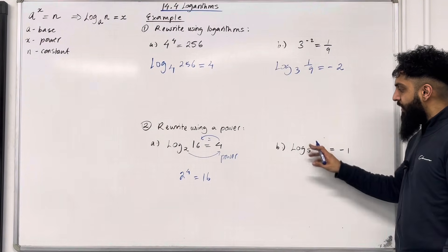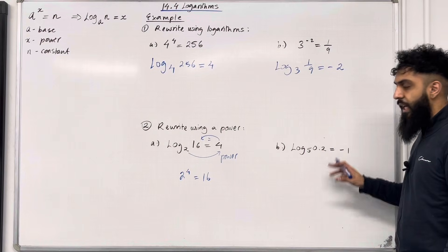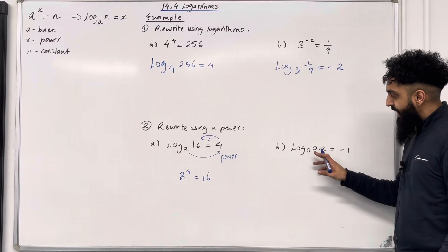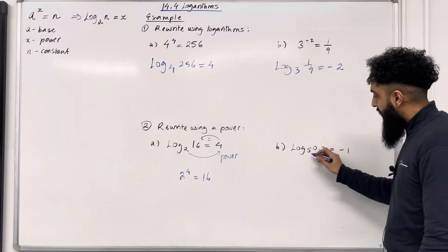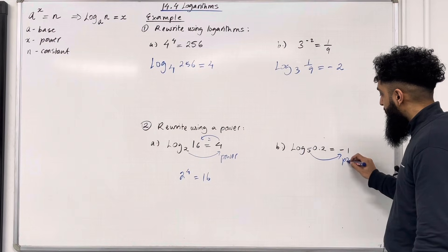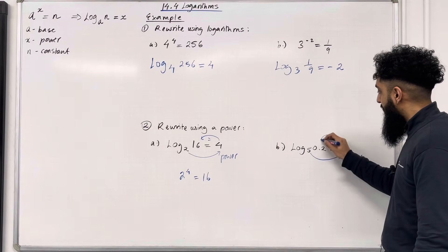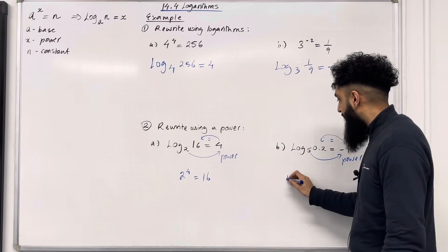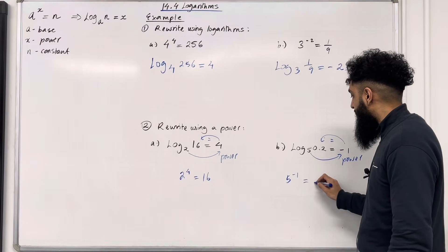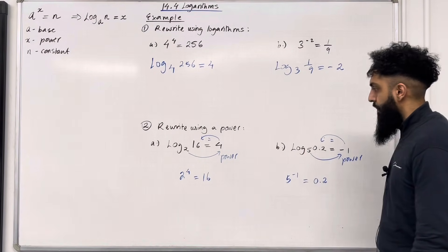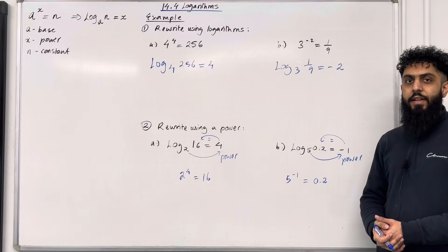Part B, log to the base 5 of 0.2 equal minus 1. So this is the base of the logarithm. We raise it to the power minus 1, and we set it equal to what we have inside the logarithm. So we have 5 to the power minus 1 is equal to 0.2. And that there completes my example.